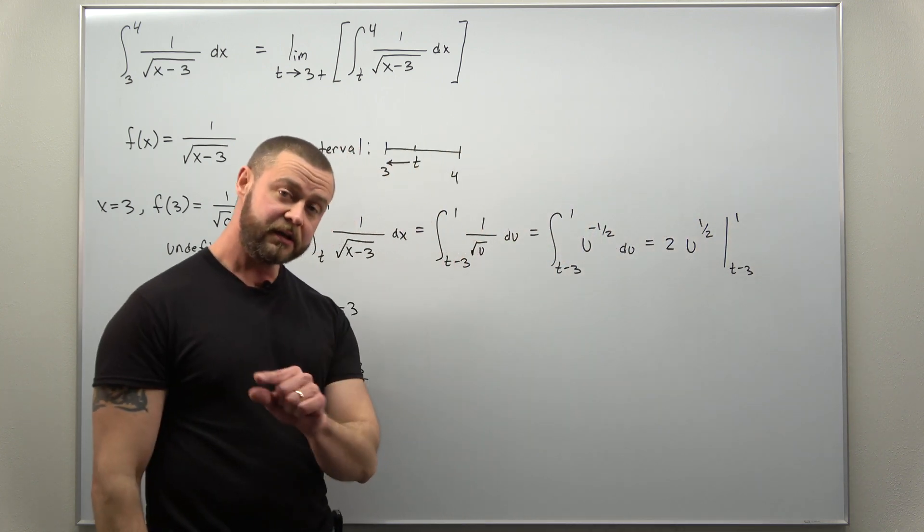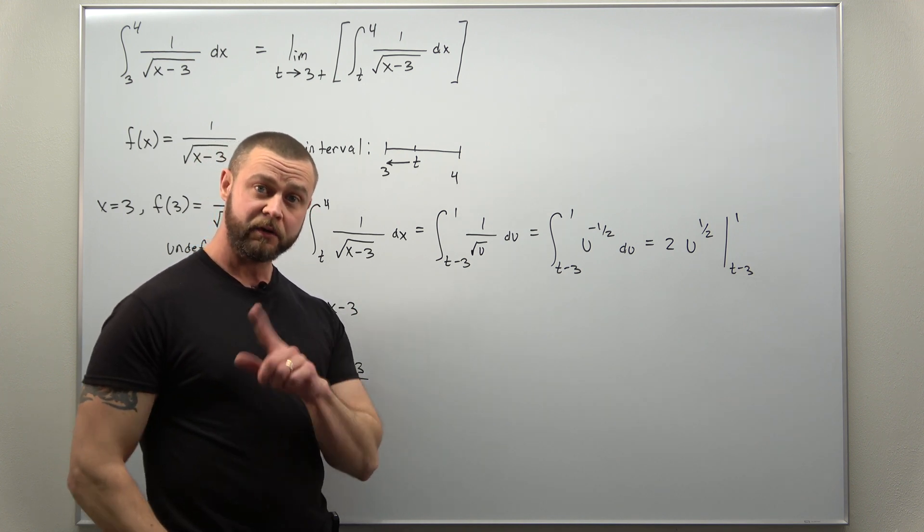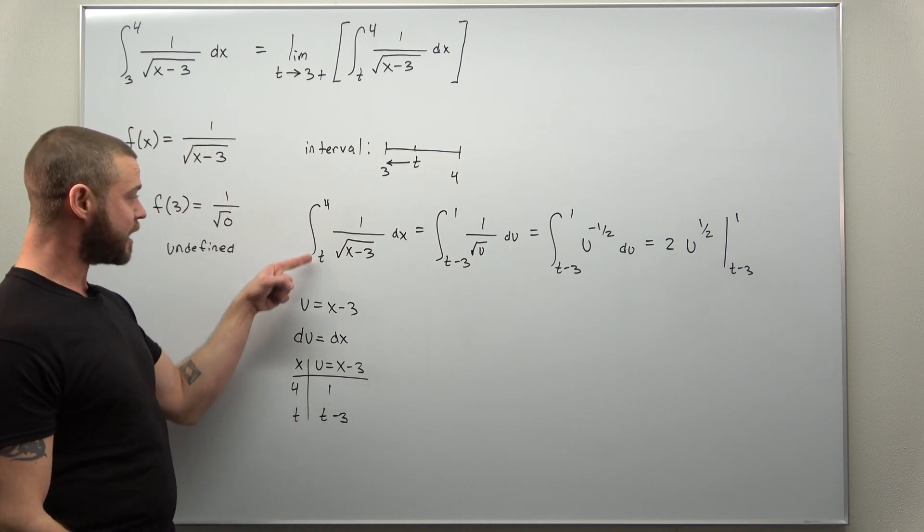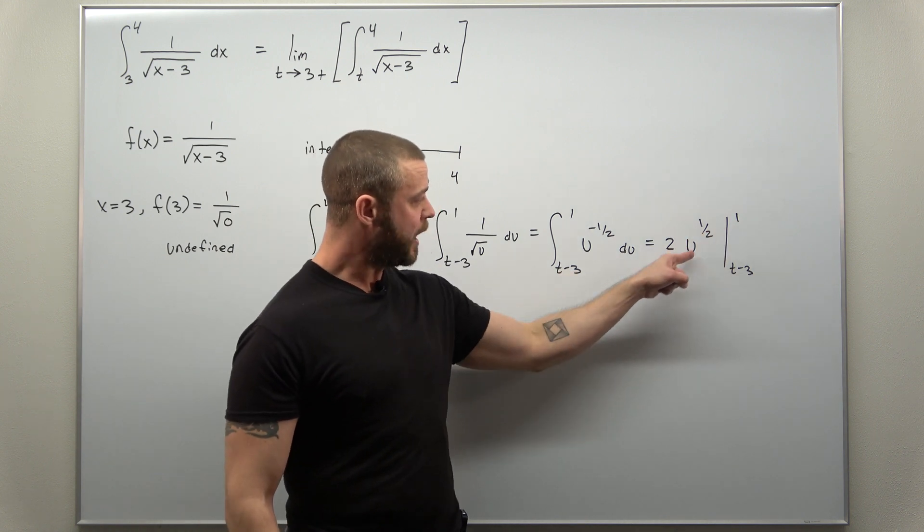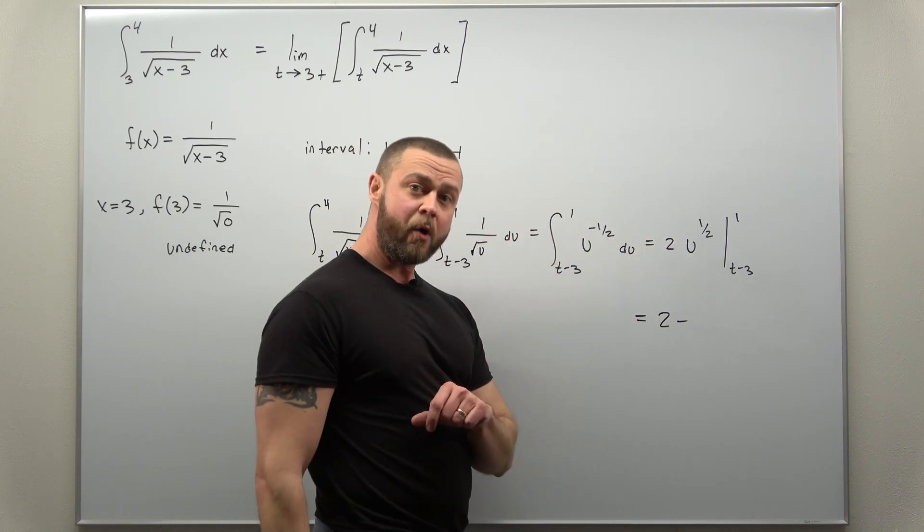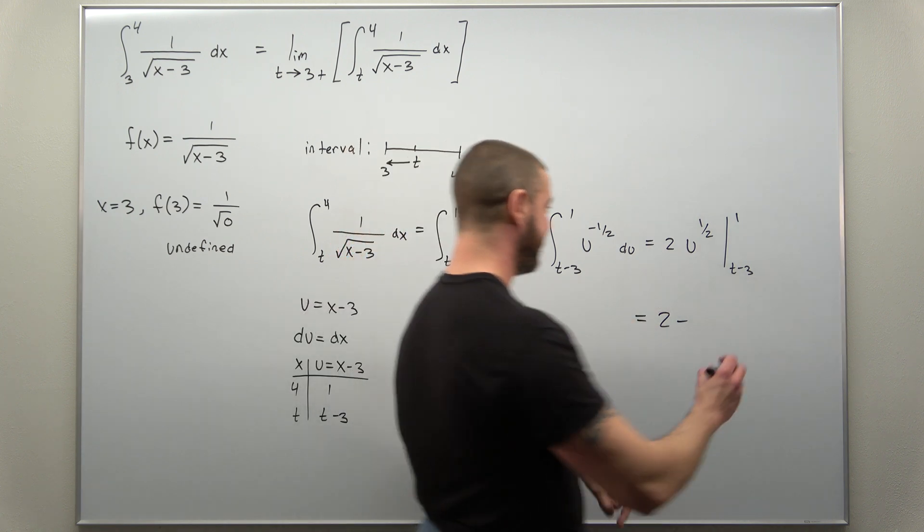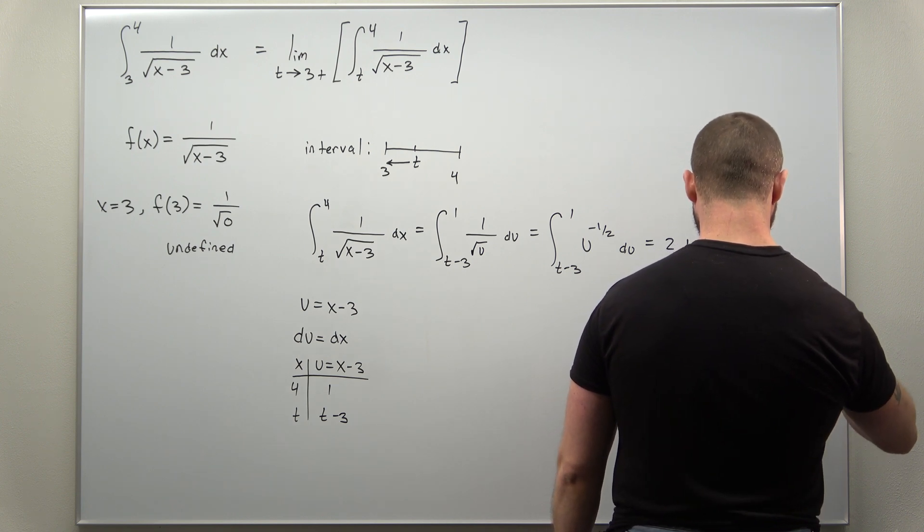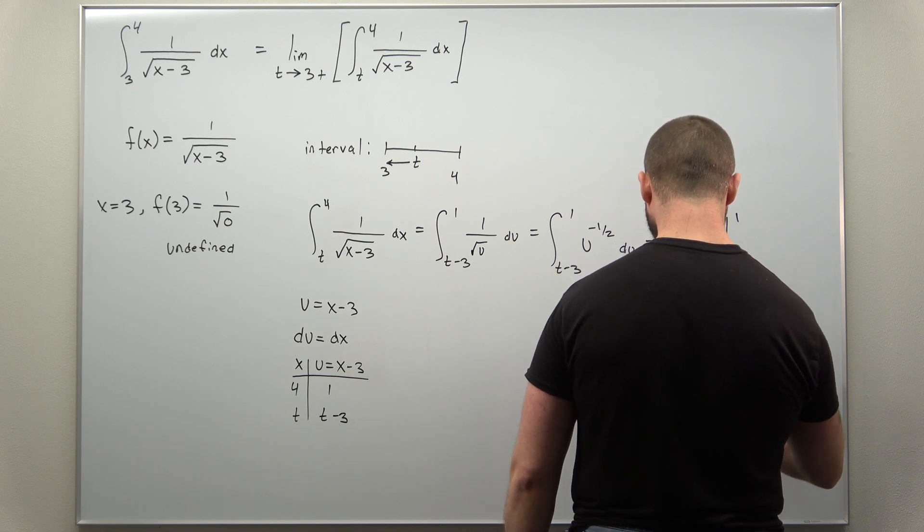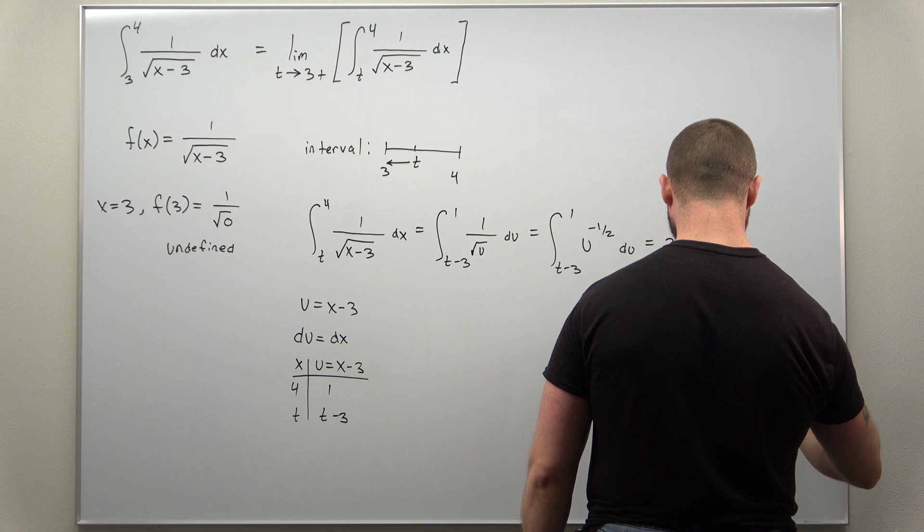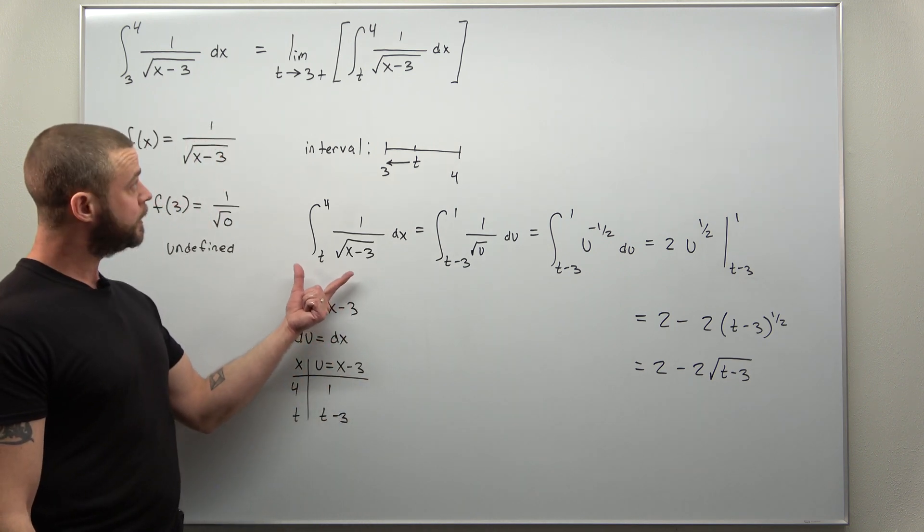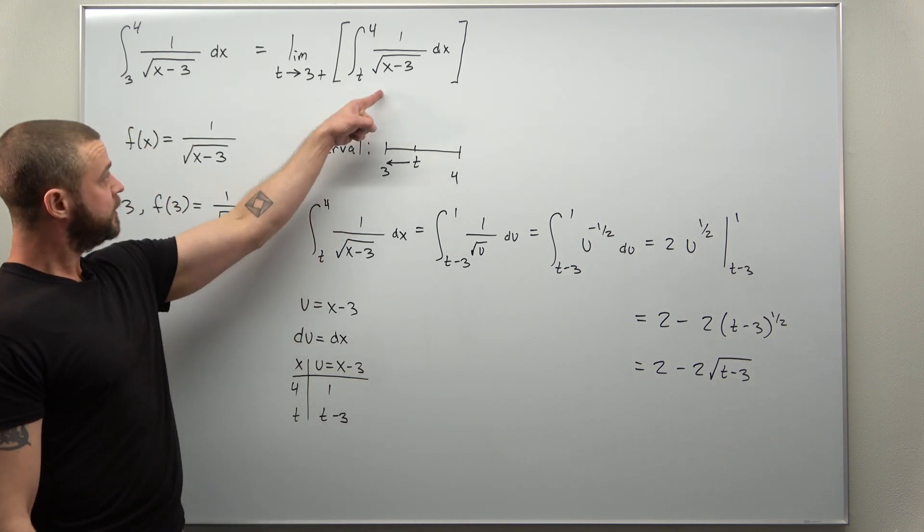And then we evaluate that, plugging in t minus 3 and 1 with the fundamental theorem of calculus. If we go ahead and do that here, notice when I plug in my u value as 1, we don't have to convert back to our original limits if you convert here like we did. When we plug in 1, you get 1 to the one-half power. One to any power is one, so that's going to work out nicely. But now when we subtract, we're going to get t minus 3 to the one-half power. And if it's easier, you can convert the one-half power back to a square root and write this as 2 minus 2 times the square root of t minus 3.